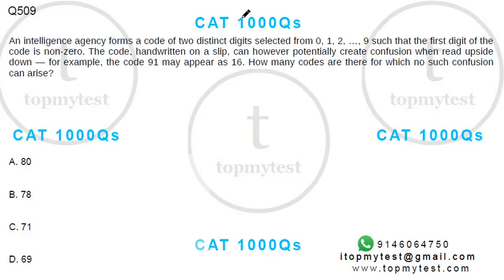Hi, this is a pretty interesting question on numbers and counting. An intelligence agency forms a code of two distinct digits selected from 0 to 9 such that the first digit of the code is non-zero. The code, handwritten on a slip, can potentially create confusion when read upside down.